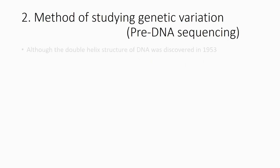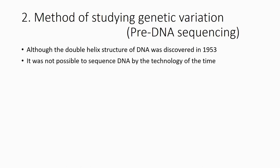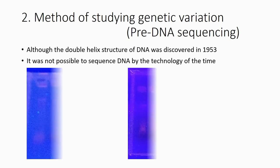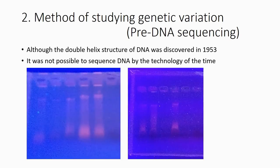This is the pre-DNA sequencing era. Although we know the double helix structure of DNA, it was impossible to sequence DNA at that time — it was very difficult. That is why the common method used was gel electrophoresis.